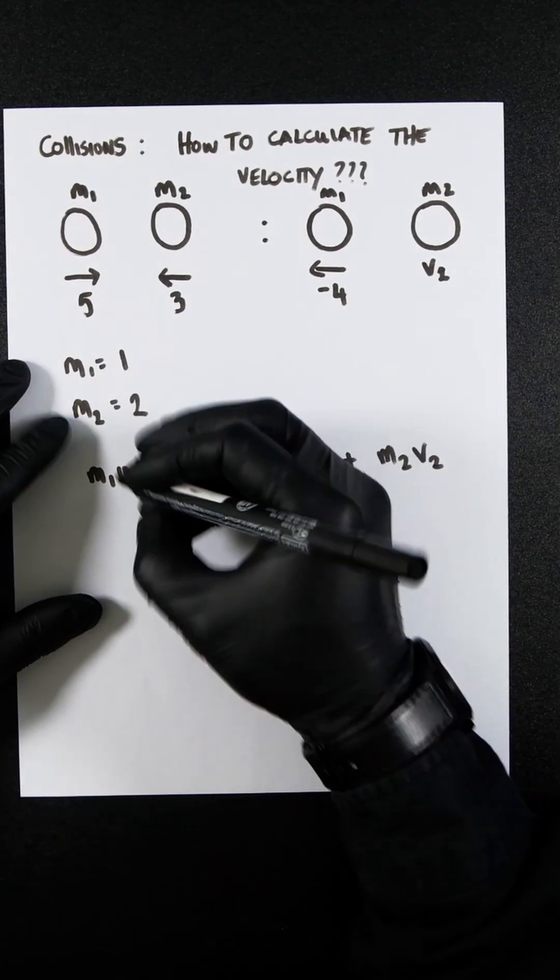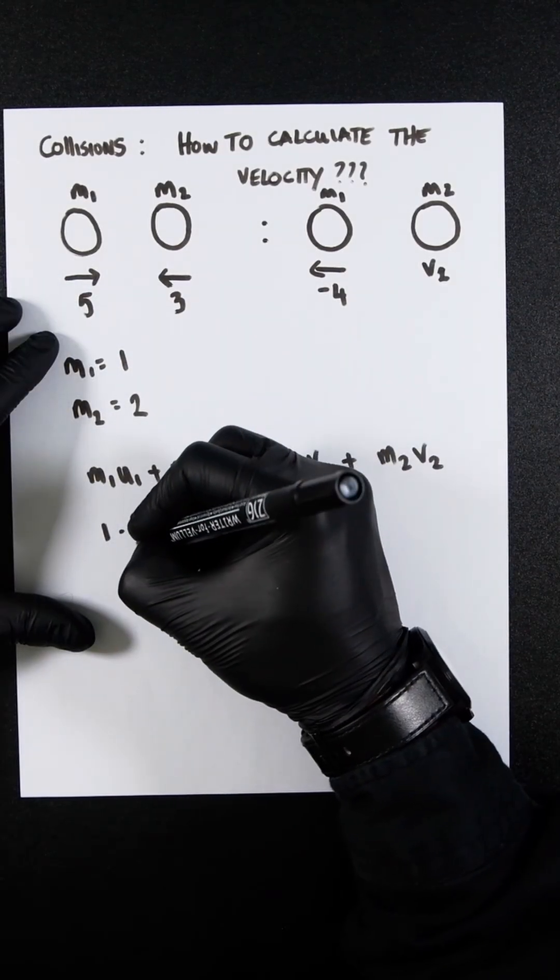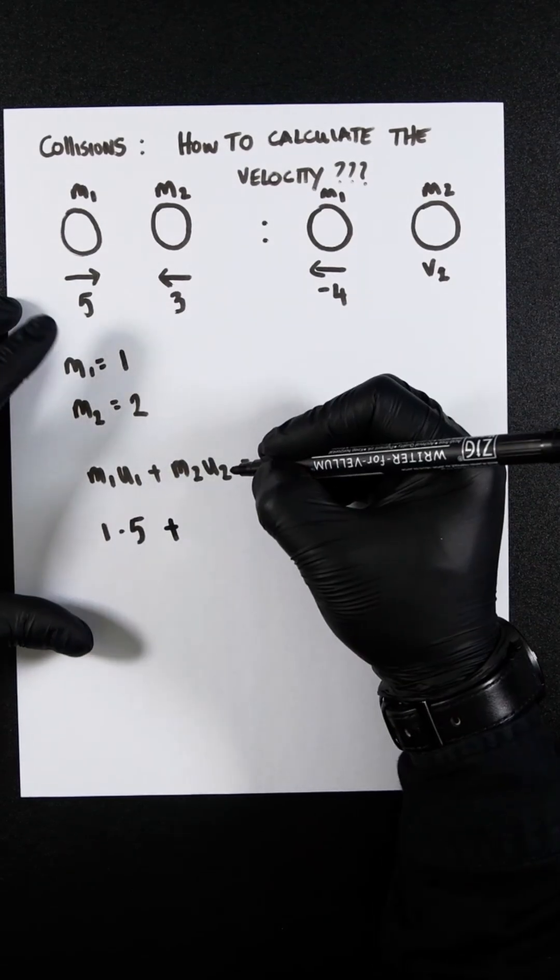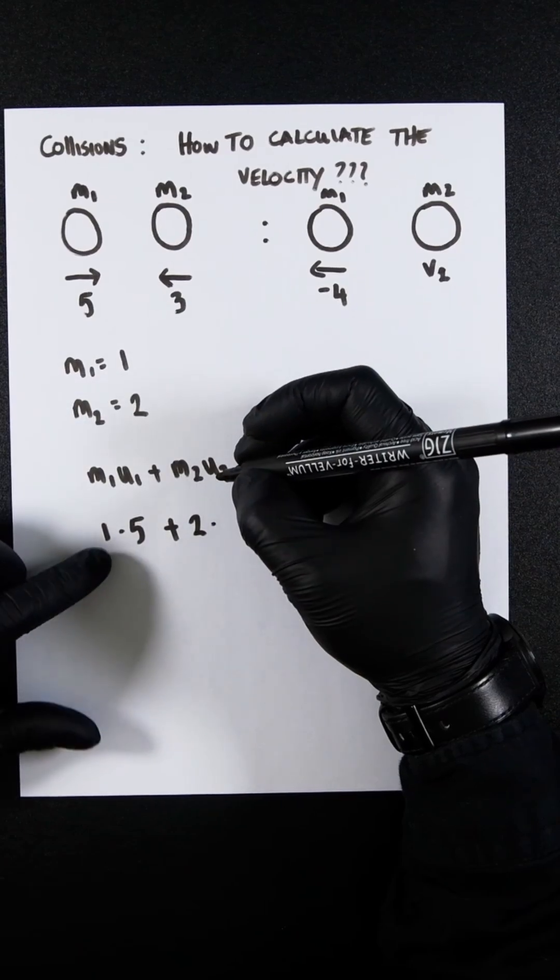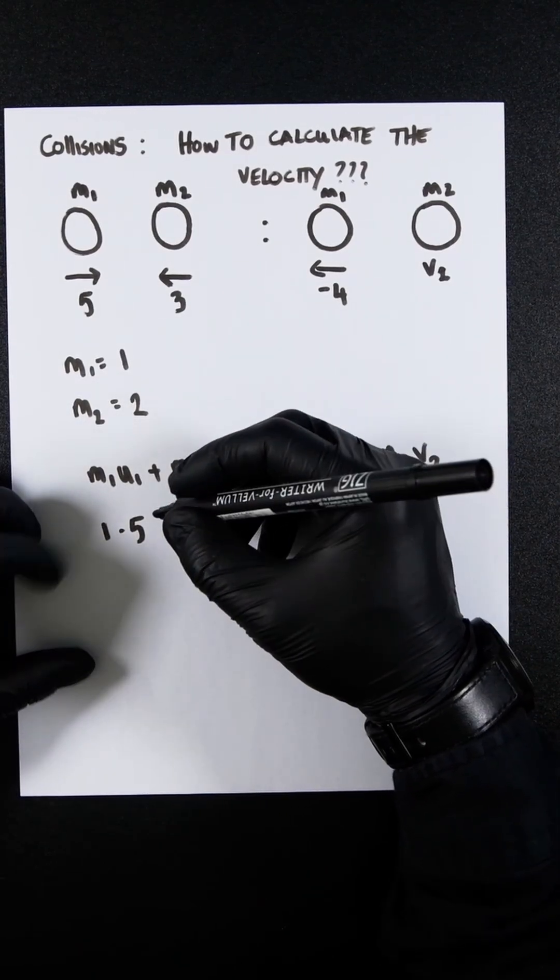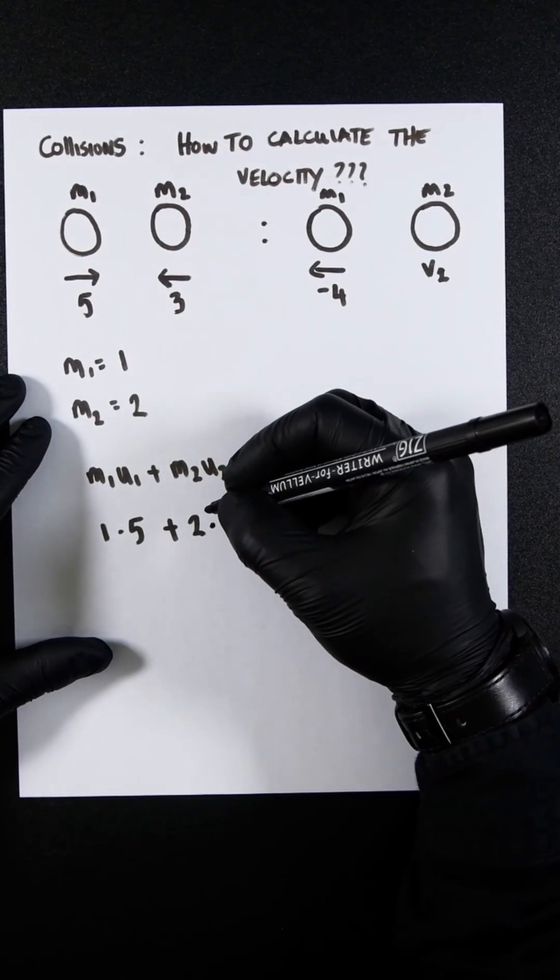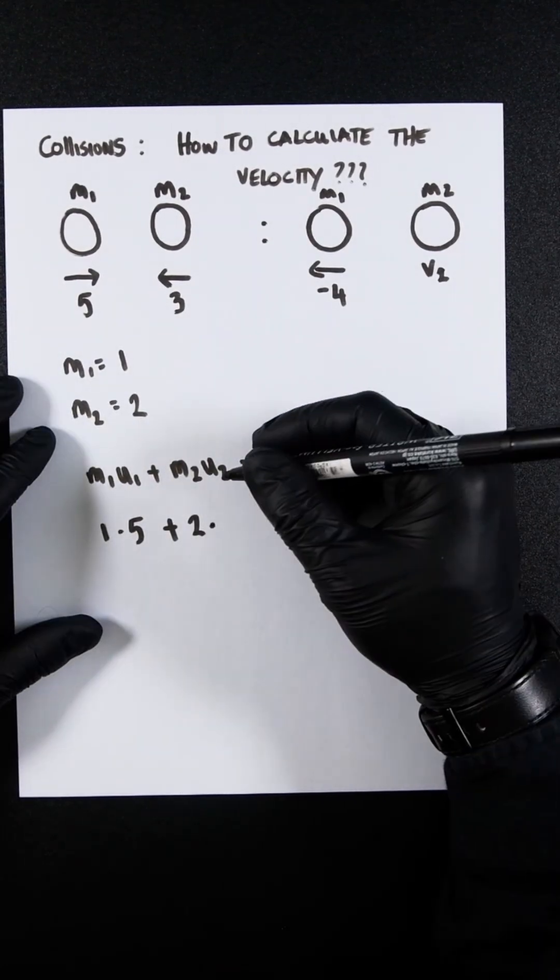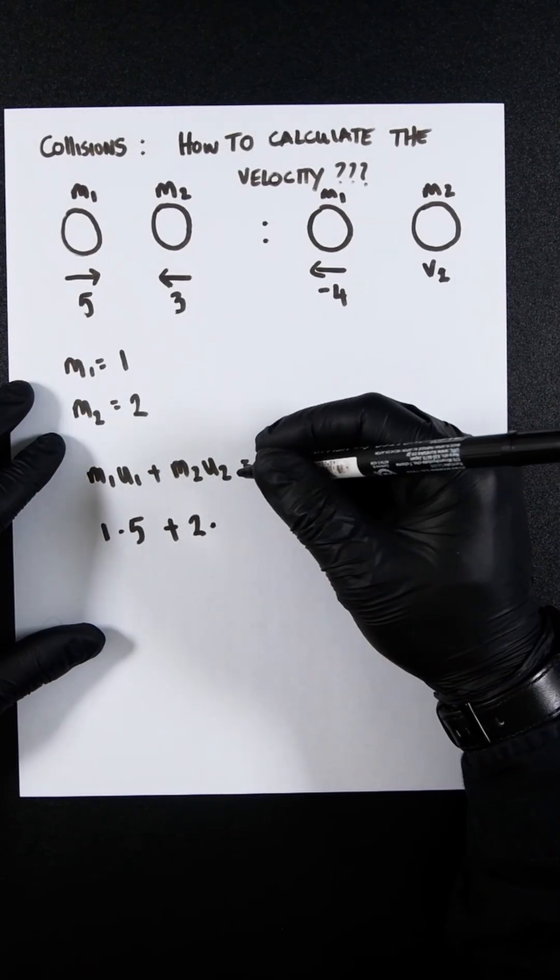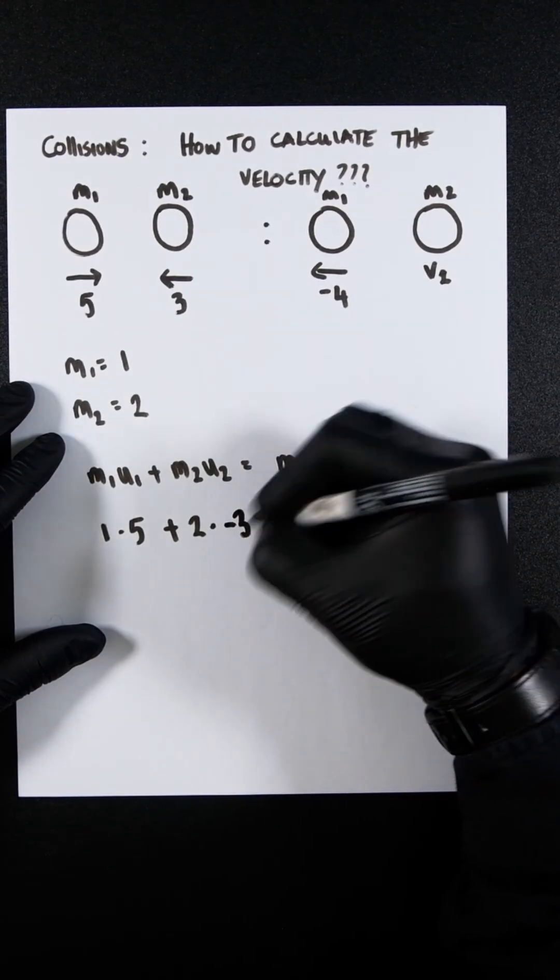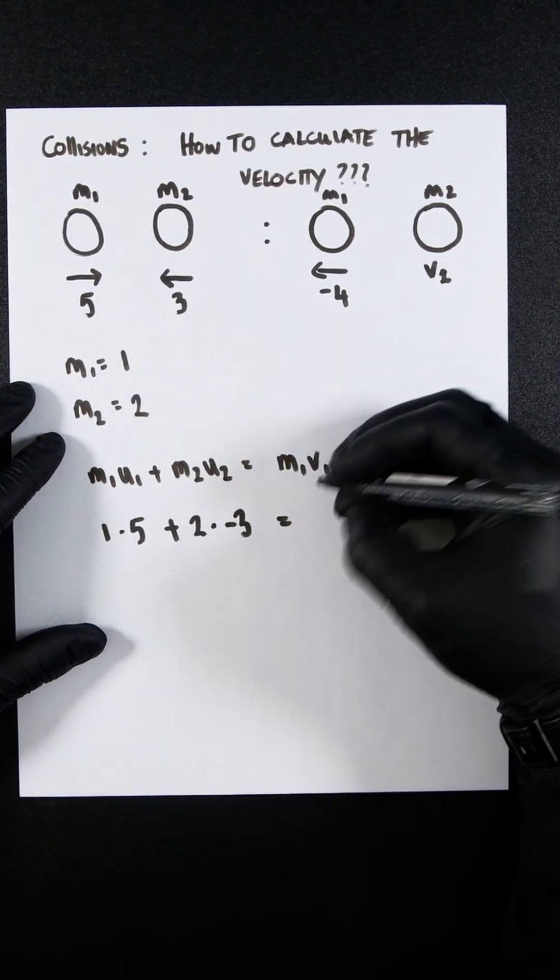So we know that M1U1 plus M2U2 equals M1V1 plus M2V2. Let's plug everything in. We've got M1, which is 1, times 5, and it is positive, plus M2, which is 2, times—if you're not familiar, dot or · is the same as multiplication. So it's the dot product, but it's just sometimes used as an abbreviation. You should be familiar with that. And then minus 3, so 2 times minus 3, because it's going left, it's negative.